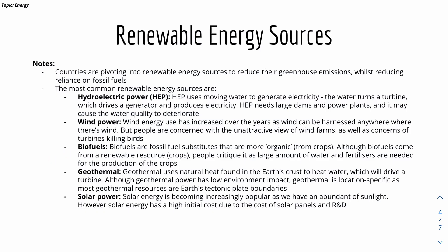Biofuels are fossil fuel substitutes that are more organic because they are made from crops. Although biofuels come from a renewable resource — crops — people critique them because large amounts of water and fertilizers are needed to produce the crops and the biofuels. Geothermal energy uses the natural heat found in the earth's crust to heat water, which drives a turbine. Geothermal sources must be located in specific regions near plate boundaries, where magma between tectonic boundaries heats nearby rocks and underground aquifers to produce geothermal energy.